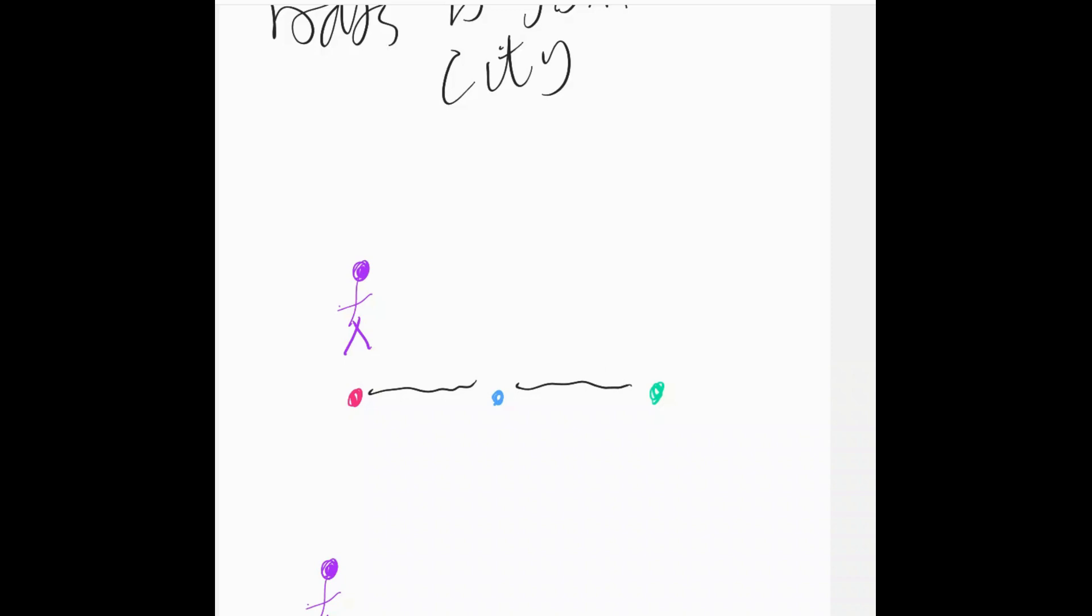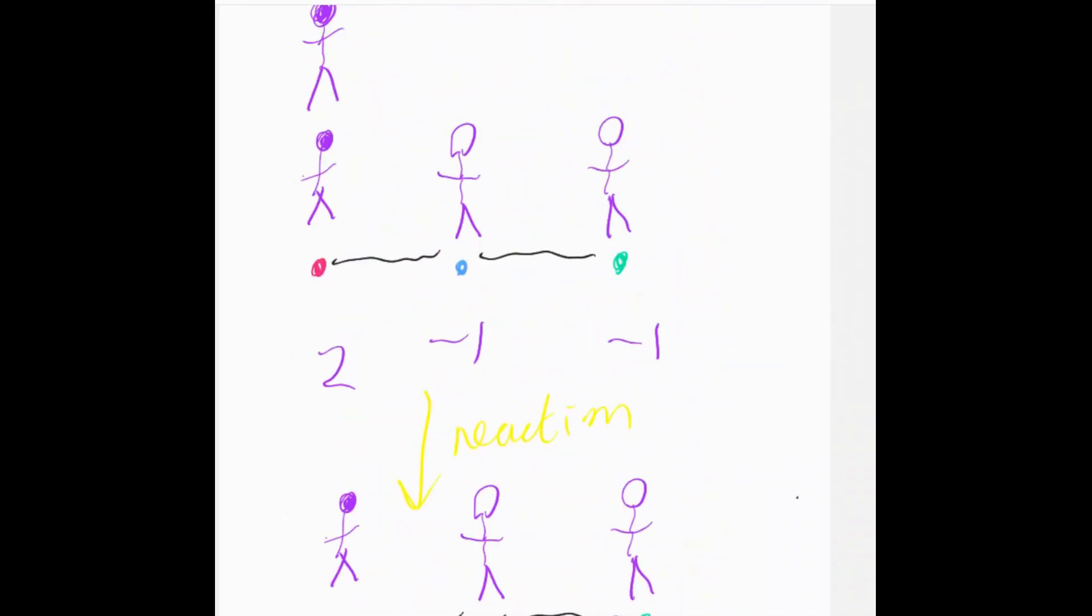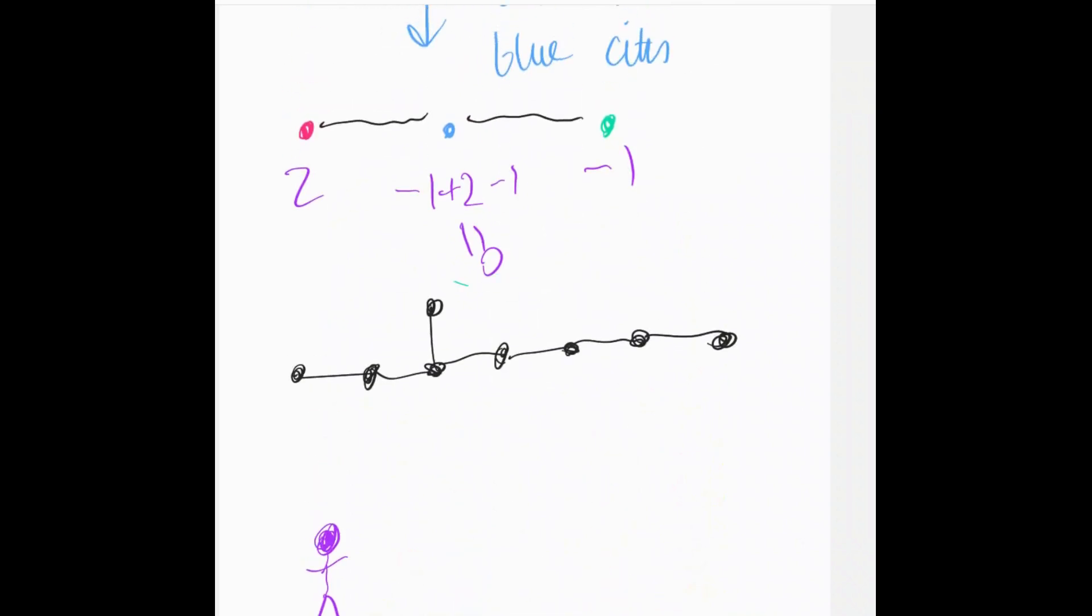And so that gives us this E8 structure where we have our graph as this particular graph here. Incidentally, if instead we use the graph, which is called, I think it's called A2, and it's this one, then we get the eightfold way of Gell-Mann, you know, describing the quarks. This is another thing that Wildberger talks about.